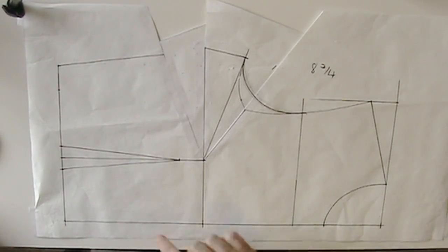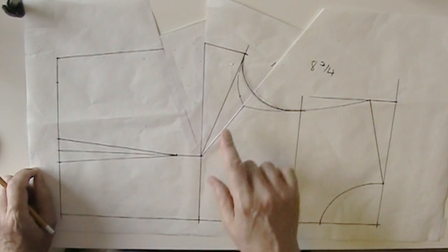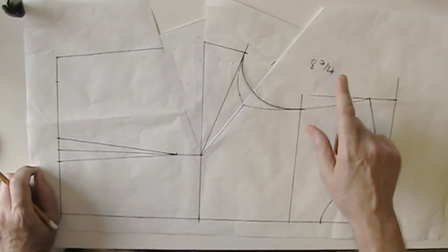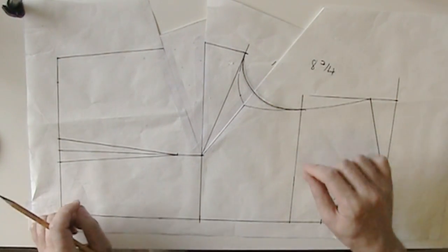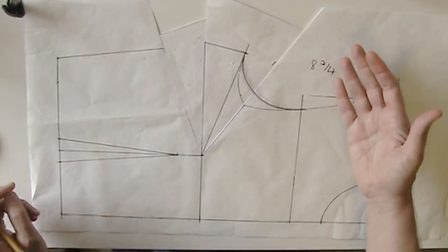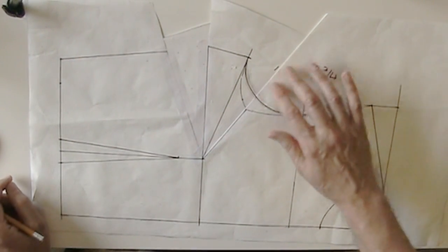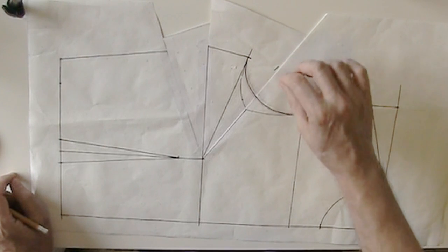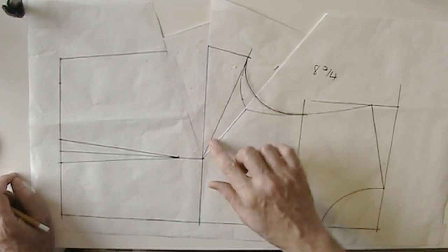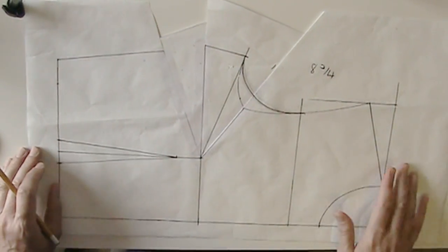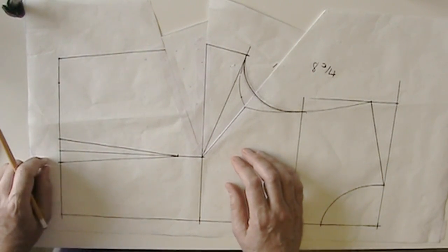Then I'm going to redraw the lower part of this armhole. I have rotated sufficient fullness out of this armhole and into this new dart so that the armhole now measures 8 and 3 quarter inches. Sometimes you have to adjust up and down. The first time you fold, you may take a little too much out and your armhole may be too short. Or it may not be short enough. So you might have to do a little shifting. If the first time you fold it, it's too short, release more fullness. If the first time you fold it, it's too long, then pivot more fullness into your dart.